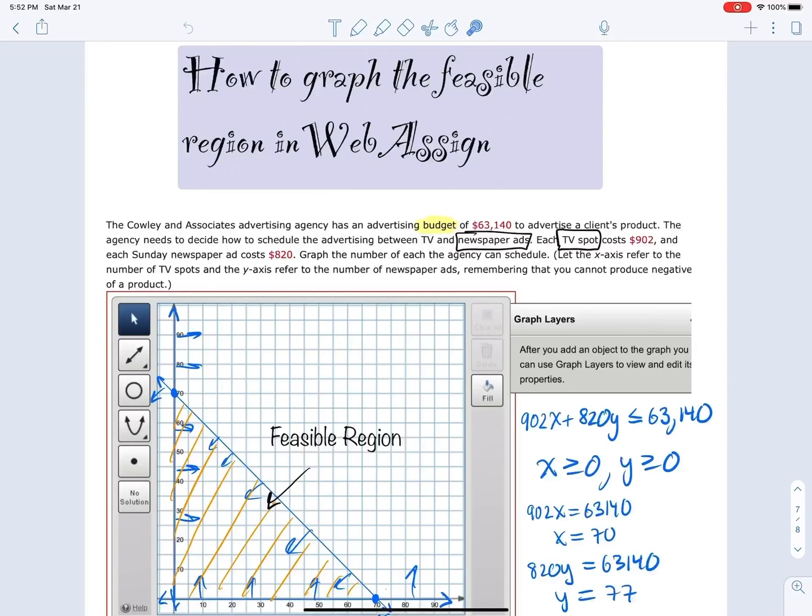These inequalities, like the ones shown here, form a system because there are three of them: one, two, and three. I want to focus on how to graph that on WebAssign.